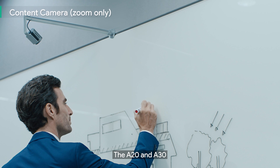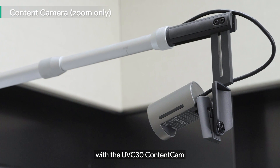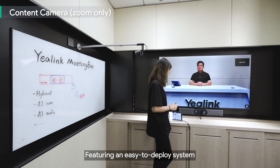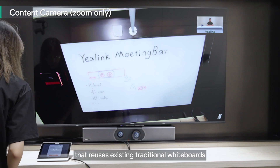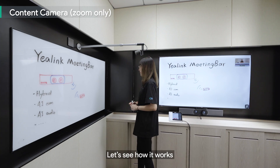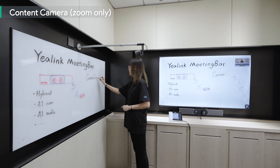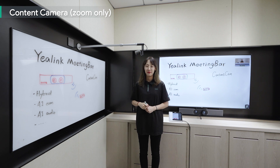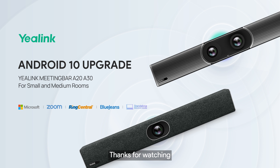The A20 and A30 support whiteboard content sharing with the UVC30 content camera. Featuring an easy-to-deploy system that reuses existing traditional whiteboards, the content camera enables real-time collaboration. Let's see how it works. That's all the highlights of our Meeting Bar A20 and A30 Android 10 upgrade. Thanks for watching!